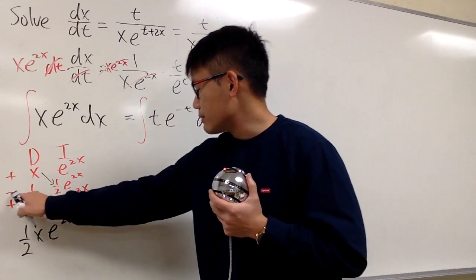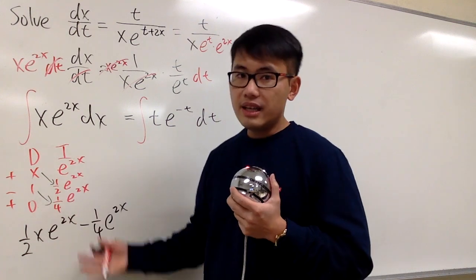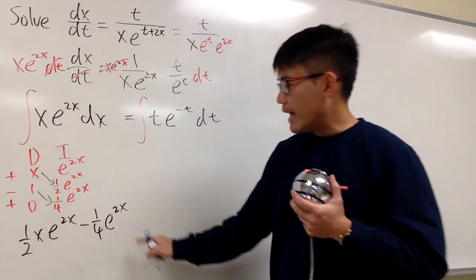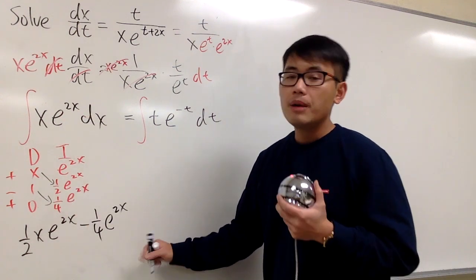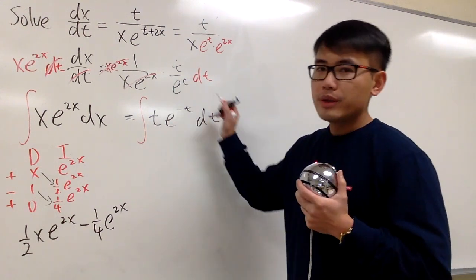Next, we'll have this times that, which is minus 1 over 4 e to the 2x. This is it for that. And I'm not going to put on plus a constant here, because I just have to do it on the right-hand side. Let's focus on integrating this right here.